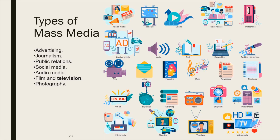What do researchers exactly investigate in mass media? There are many different types: advertising, journalism, public relations, social media, audio media, film and television, and photography — they all come under mass media.